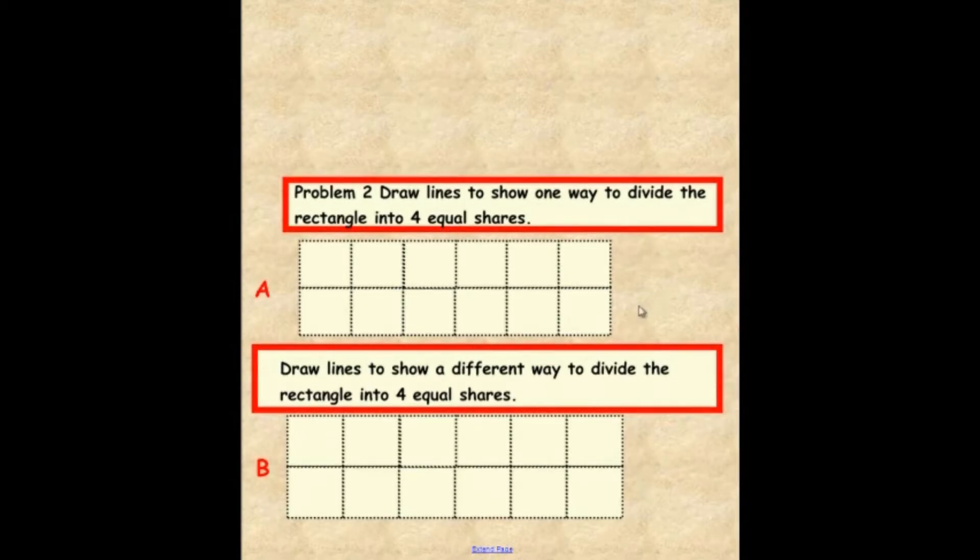Okay, let's see what you have for A. What we did is we drew a line down here and one like this. So we have one, two, three, four equal parts.